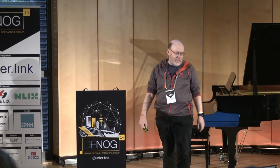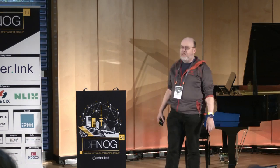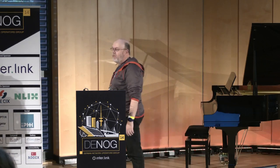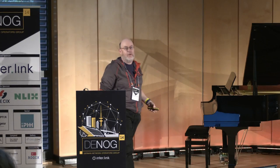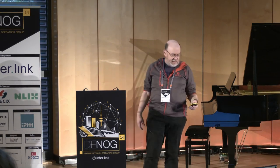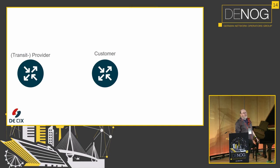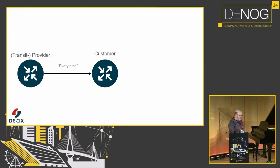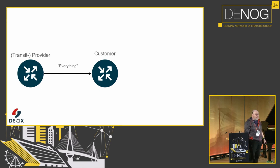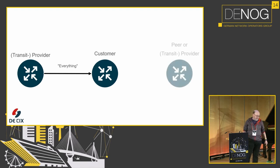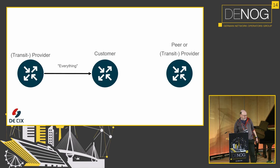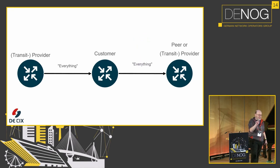It's RFC 9234 and it's about adding roles to BGP neighbors. You all know the situation: you are a customer of a transit provider, you get prefixes via BGP announced, and then you had the idea to add a second transit provider. And what happens? Flooding, because you forgot your filters.